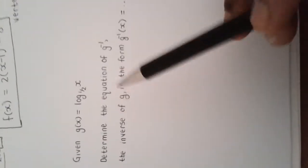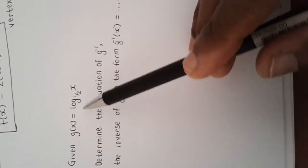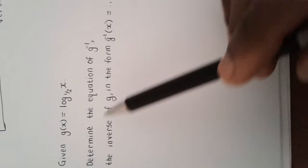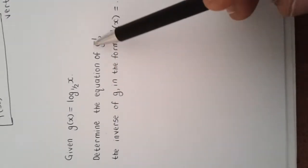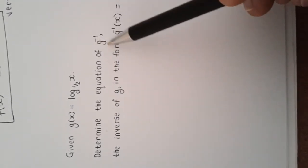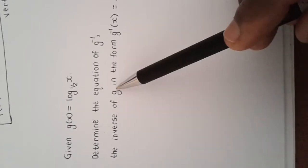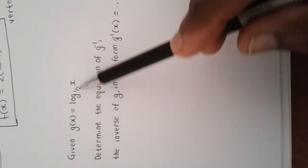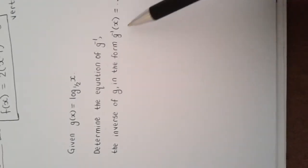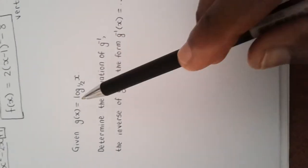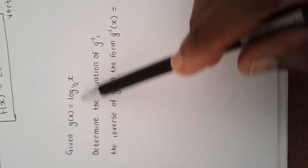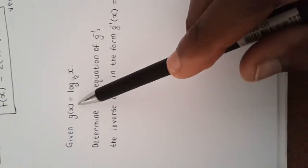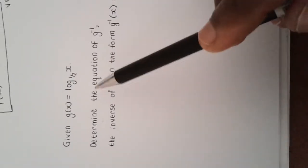In this question we are given a function g(x) = log base one-half of x. We need to determine the equation of g⁻¹, which is the inverse of g(x). Because this is a logarithmic function, we can use the notation of an inverse function, since the inverse of a log is an exponential function.